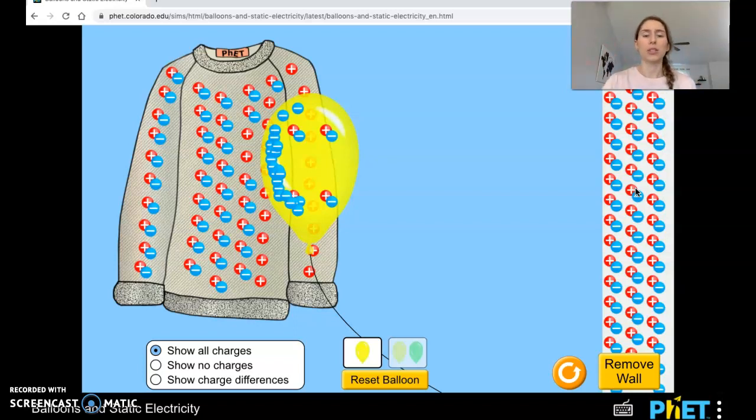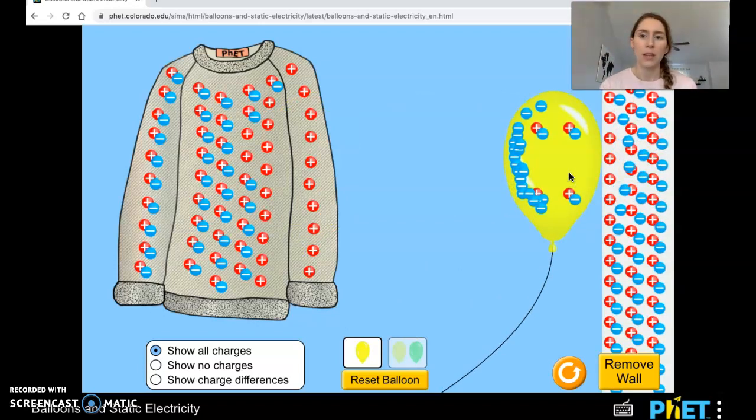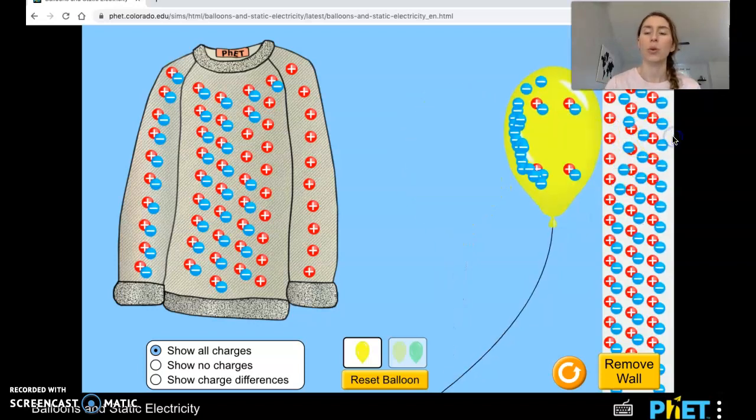Sometimes a balloon will stick to a wall and you don't even have to rub the wall. So what we're seeing here is now that the balloon will stick to the wall if you place it up against the wall. But I didn't do any rubbing. I didn't cause any transfer of particles from the balloon to the wall. Why then is the balloon sticking to the wall?